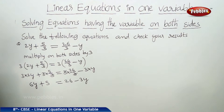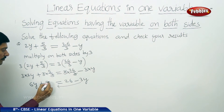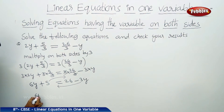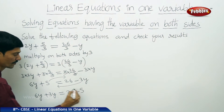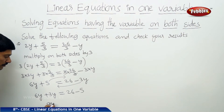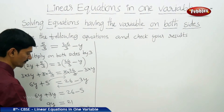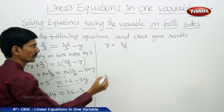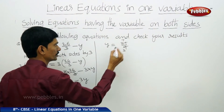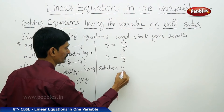To solve this, we transpose minus 3y from RHS to LHS, making it plus 3y, and transpose plus 5 to RHS making it minus 5. So 6y plus 3y becomes 9y, which equals to 26 minus 5 equals 21. Dividing: y equals to 21 by 9. Cancelling by 3, we get y equals to 7 by 3. The solution is y equals to 7 by 3.